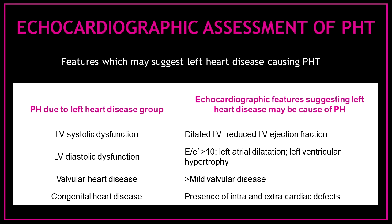Features which may suggest left heart disease as the cause of pulmonary hypertension include left ventricular systolic dysfunction, left ventricular diastolic dysfunction, valvular heart disease, and congenital heart disease. Echocardiographic features confirming this include a dilated left ventricle with reduced ejection fraction, an E/E' ratio more than 10, left atrial dilatation, left ventricular hypertrophy, more than mild valvular disease, or the presence of intra- or extra-cardiac defects.